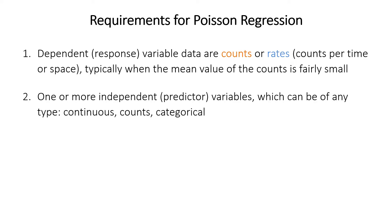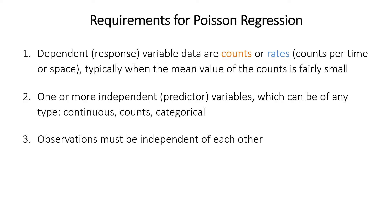The independent variable, or predictor, has no specific requirements — there might be one or more of them. At least one is often a continuous variable, but you can also have categorical data with two or three categories. As with pretty much all tests, the observations must be independent of each other, meaning no repeated measurements on the same subjects and no time series where points might be related to previous points.